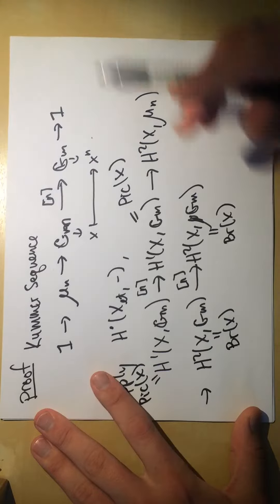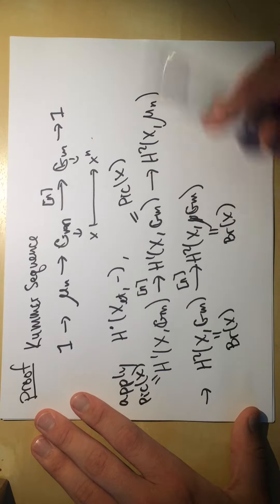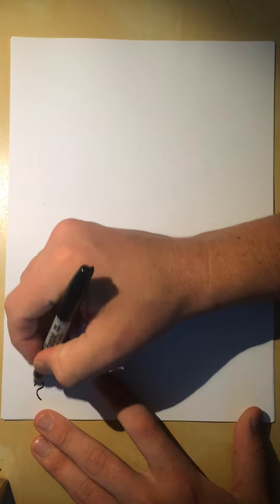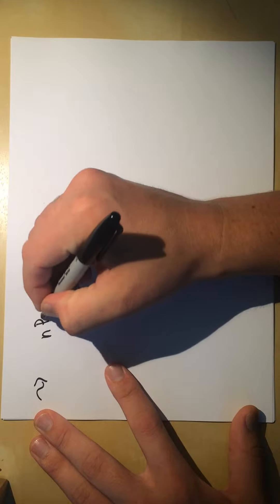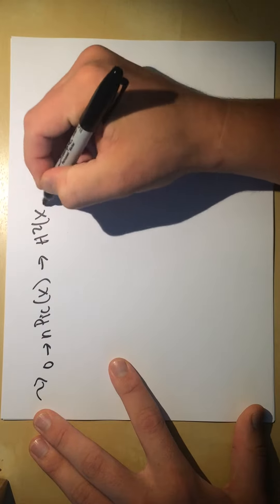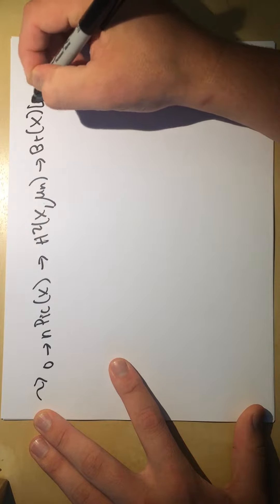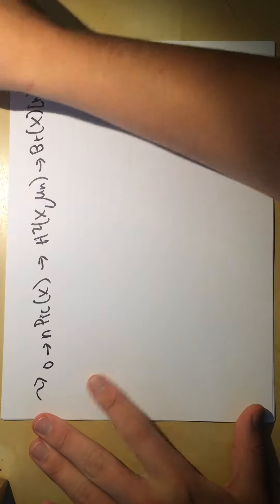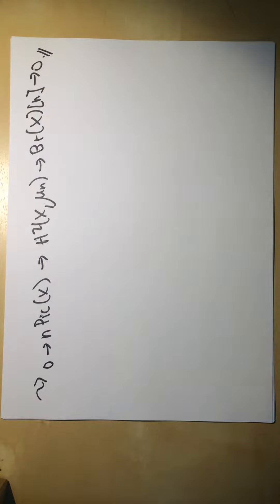We replace terms with the kernel and image respectively. The baby Brauer is sandwiched between the image of multiplication by n on Picard and the kernel of multiplication by n on Brauer. This gives us a sequence involving n·Pic, baby Brauer, and Br[n].